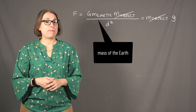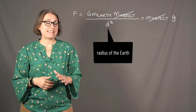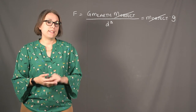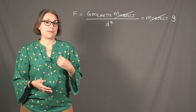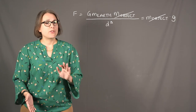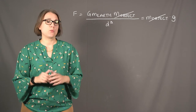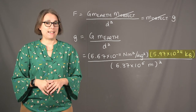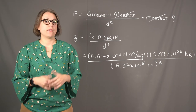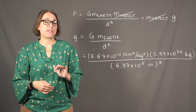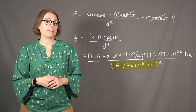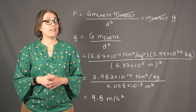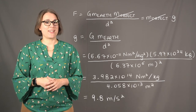The remaining mass is the mass of the Earth, and the distance is equal to the radius of the Earth, assuming the object is at sea level. As discussed, this value will change if we climb a mountain or go to the bottom of an ocean, but those effects are small and we'll ignore them. Plugging in the mass of the Earth — 5.97 times 10 to the 24 kilograms — and the radius of the Earth — 6.37 times 10 to the 6 meters — we can calculate that little g, the acceleration due to gravity on the Earth's surface, is equal to 9.8 meters per second squared.